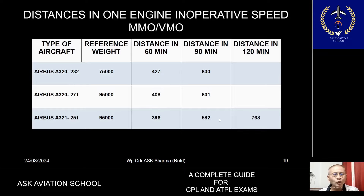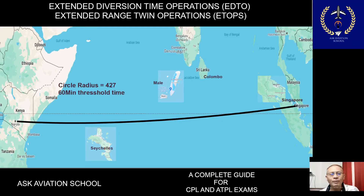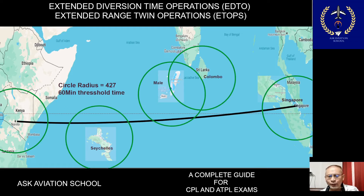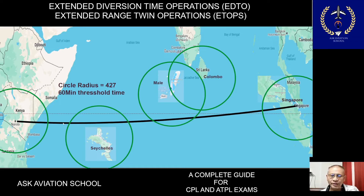These distances are used to plan a particular route. Consider a route from Nairobi to Singapore — this is for demonstration purposes only. The suitable alternates considered are Seychelles, Male, Colombo, and Singapore. The operator draws circles corresponding to 60 minutes of flight time — in this case 427 nautical miles — around Nairobi, Seychelles, Male, Colombo, and Singapore. As clearly visible, these circles do not overlap, meaning an aircraft at certain positions would take more than 60 minutes to divert. Therefore the operator must apply for EDTO operations.